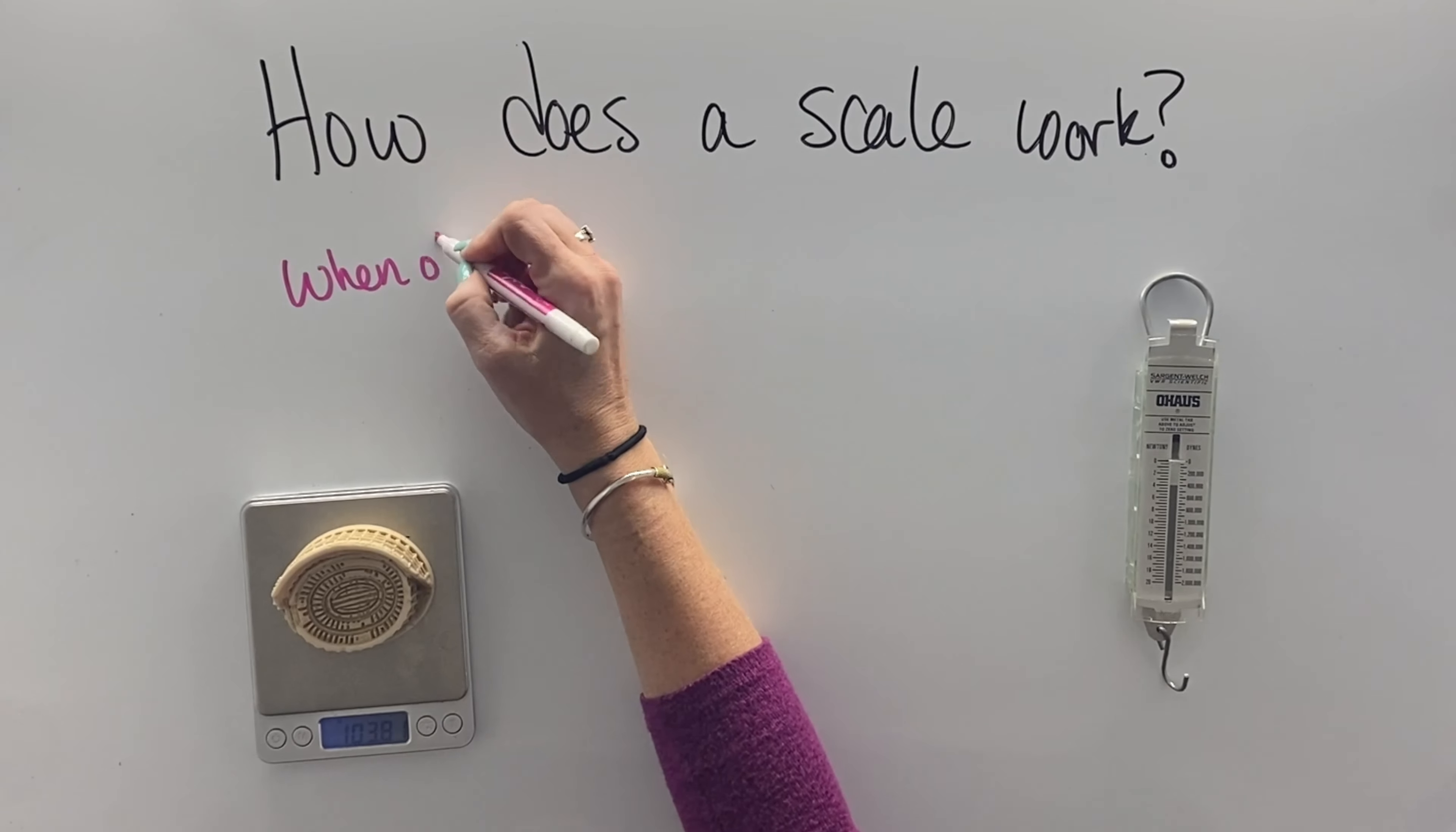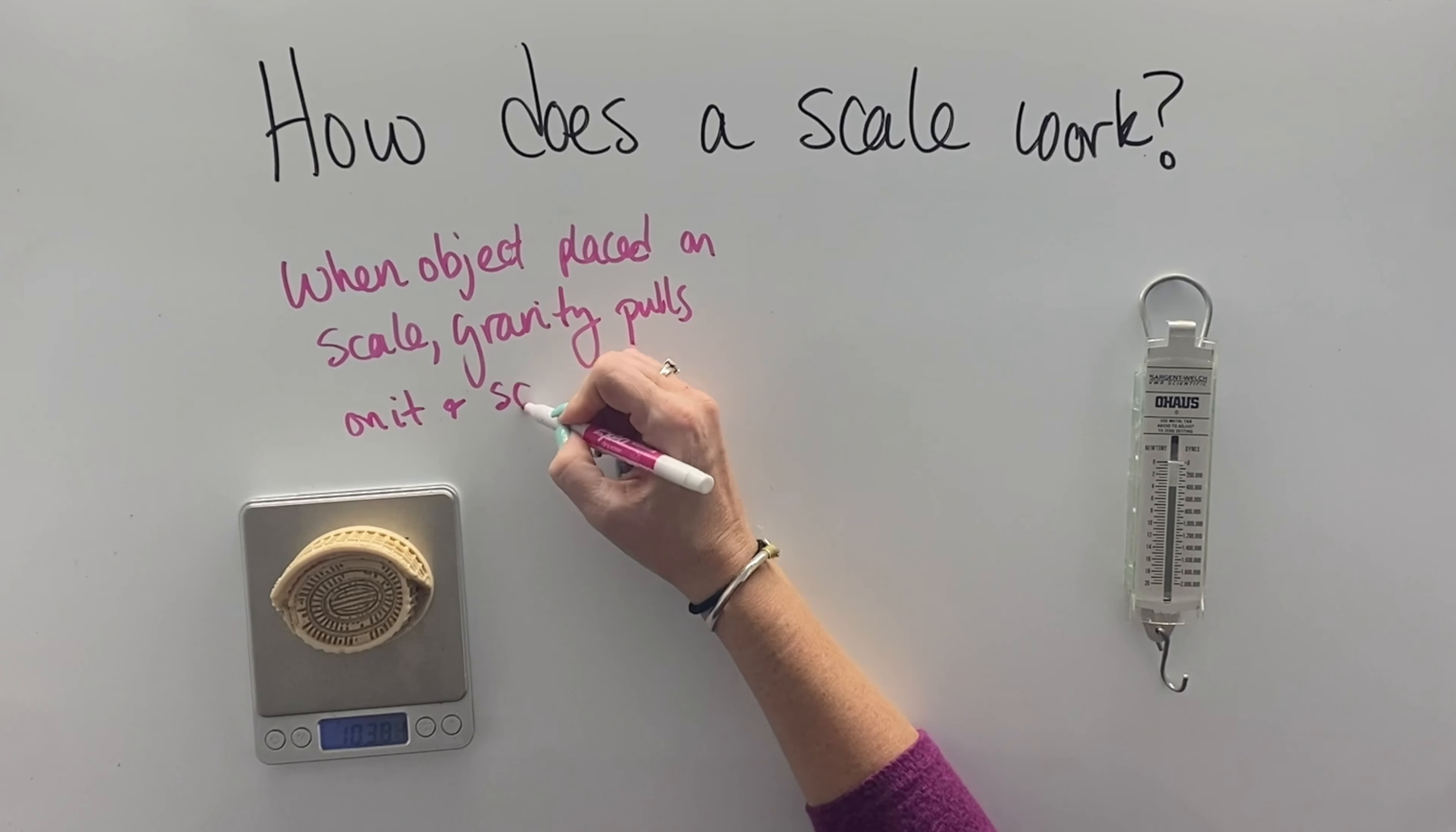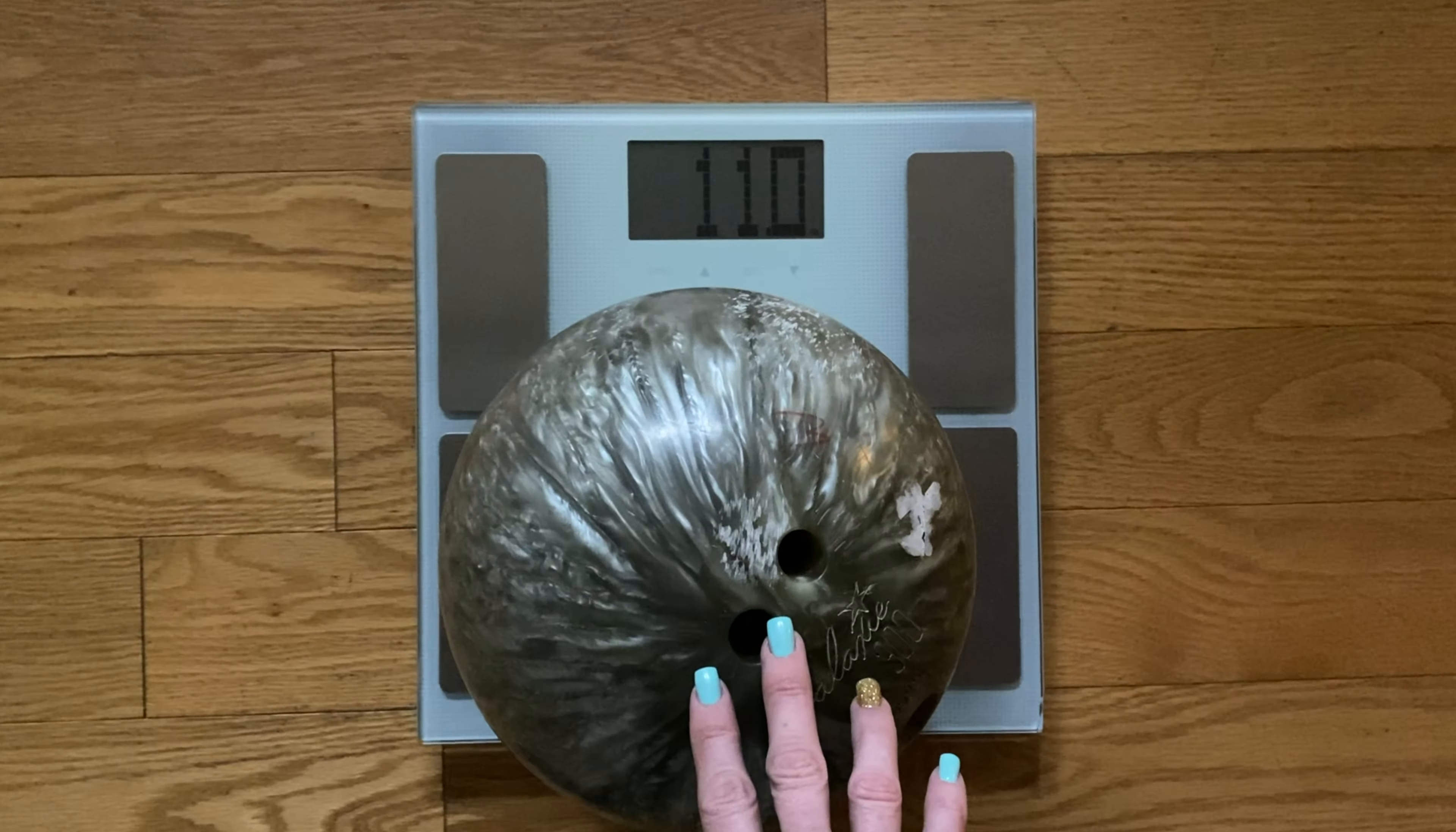A scale works by being between the object and the pull of gravity. The springs are compressed or stretched within a scale, depending on how it works, to record the amount of force that gravity applies to that object. And that is what we call weight. You can see here the spring squishes inside and records the weight.